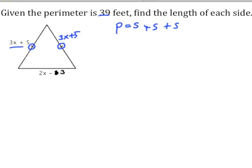To find the length of one of those sides, we need to figure out what x is. Let's plug this information into our perimeter formula. The perimeter was 39, and that equals one side, 3x + 5, plus another side, plus this third side.